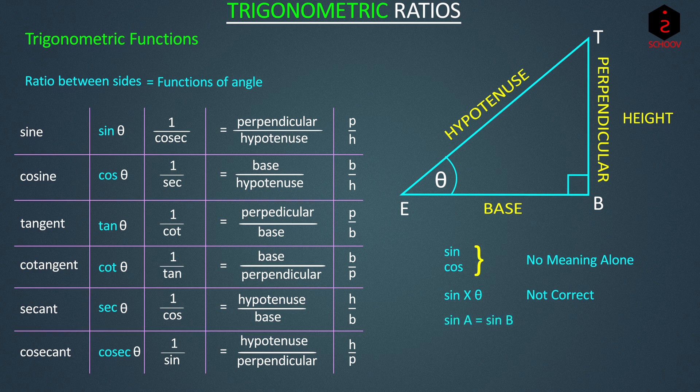You cannot just cancel sine like this and say that A equals B — this is not correct; it does not make any sense. A is not always equal to B; it is sine A that is equal to sine B. So these six functions we've just seen are equal to ratios of sides, and hence we call them trigonometric ratios.